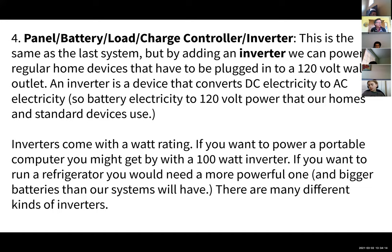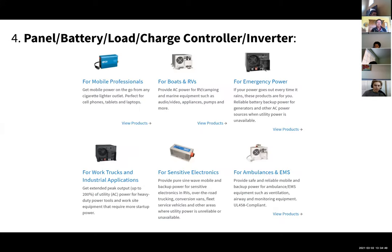The fourth kind is just like that, but it adds one more thing called an inverter. An inverter converts the battery power — DC electricity — to AC electricity. That's the kind of power we have in our wall outlets at home. Inverters come with a watt rating. You can get a really inexpensive inverter that you can plug into your car's charging port that'll run a notebook computer — that'd be like 100 watts or less — or you can buy inverters that'll run a whole house.